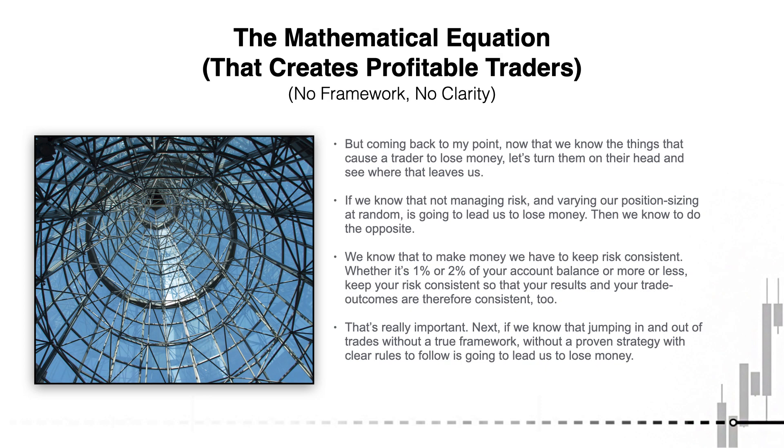Now, coming back to my point here, now that we know the things that actually cause a trader to lose money, like we've just discussed, let's turn them on their head, and see where that actually leaves us. So if we know that not managing risk, and varying our position sizing at random, is going to lead us to lose money, then we know to do the opposite. We know that to make money, we have to keep risk consistent. Whether that's 1% or 2% of your account, or more than that, or less than that, keep your risk consistent, so that your results and your trade outcomes are therefore consistent too. That's really important.